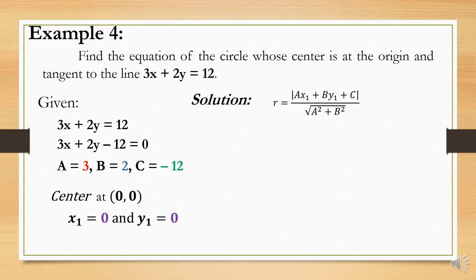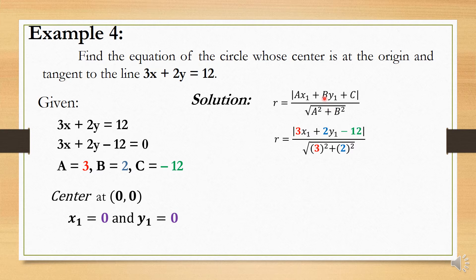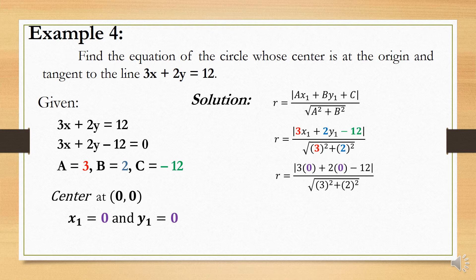From the given formula of the radius, substitute the values of A, B, and C. A is 3, B is 2, and C is negative 12. So we have R is equal to the absolute value of 3 times x sub 1 plus 2 times y sub 1 minus 12, all over the square root of 3 squared plus 2 squared. Then we substitute the coordinates of the center: x sub 1 equals 0 and y sub 1 equals 0.